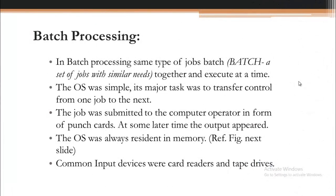The first one is batch processing. By 'batch' we refer to a group of similar things — here, a group of similar tasks. In batch processing, the same type of jobs are batched together and executed at a time. Jobs belonging to the same group, on the basis of their similarities, were grouped together and executed all at once rather than one by one independently.